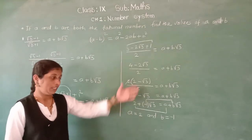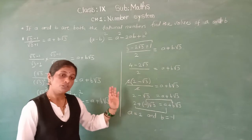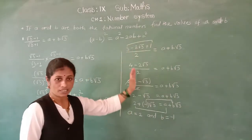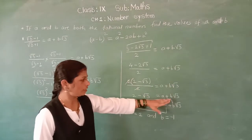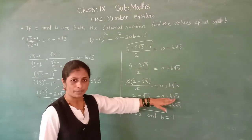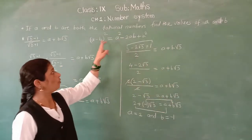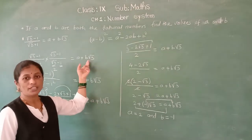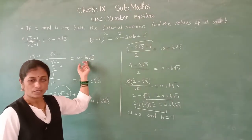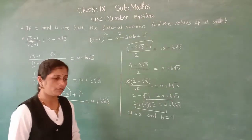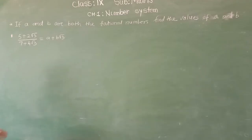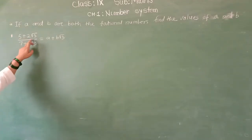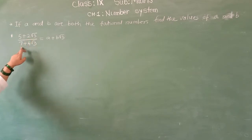In this example, you can separately solve the left hand side, and when you get the final number, then at the final step you can compare this number with A plus B root 3 to identify A and B. Now we will see one more example: 5 plus 2 root 3 upon 7 plus 4 root 3.